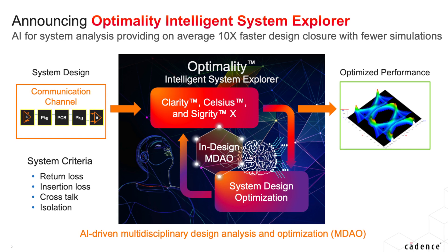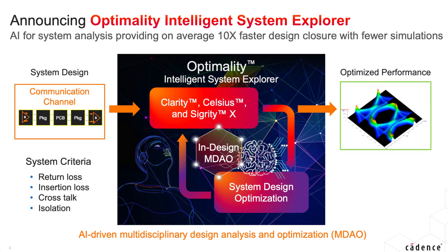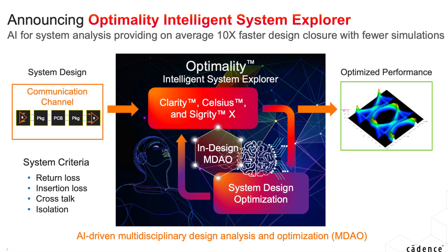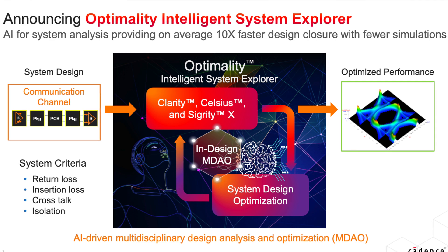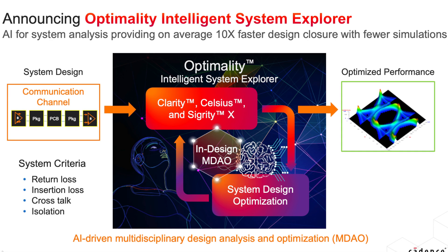When engineering an individual component, there's typically one or two physics that dominate the design, and traditional simulation tools have been sufficient to address the need. However, we now live in a world where products are becoming more complex, reliability is required, and high performance is expected. To deliver on those market demands, optimization at the system level is not just a nice-to-have but a necessity.